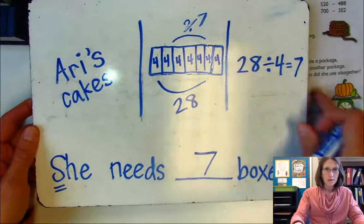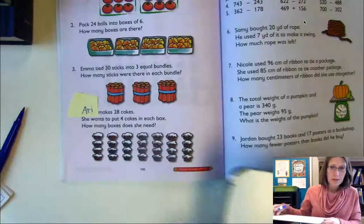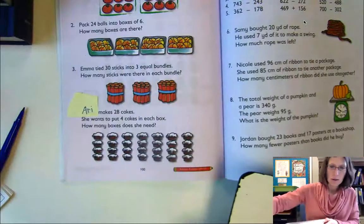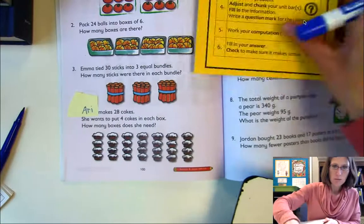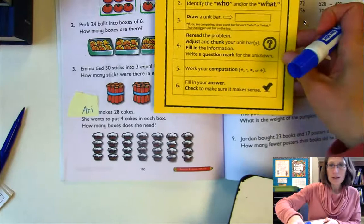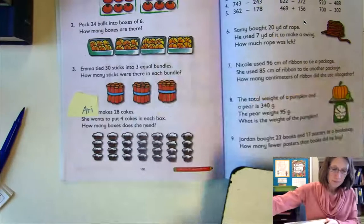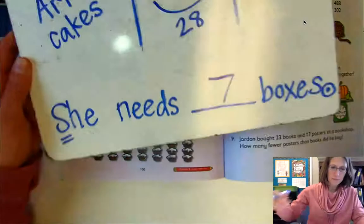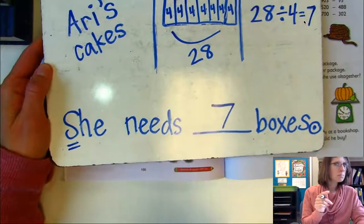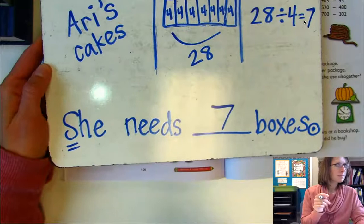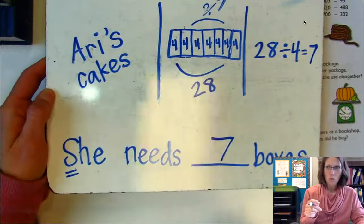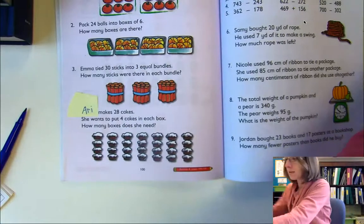Let's make sure that our answer makes sense - that is our last step. Fill in your answer and check to make sure it makes sense. Ari, do you need seven boxes? I think so. Nice job, scholars.